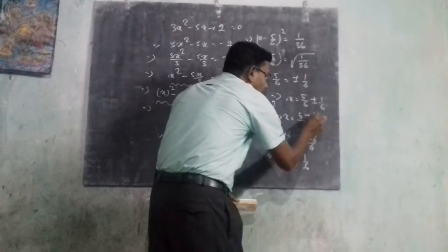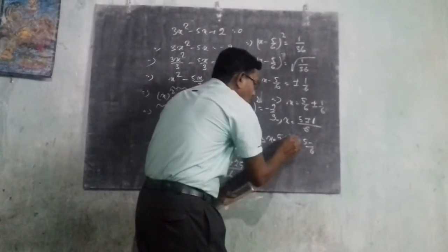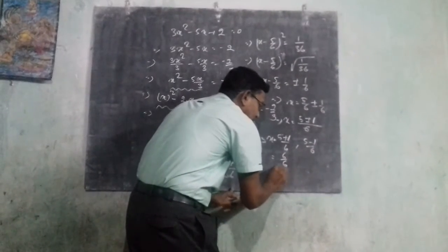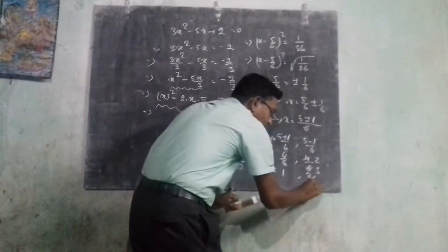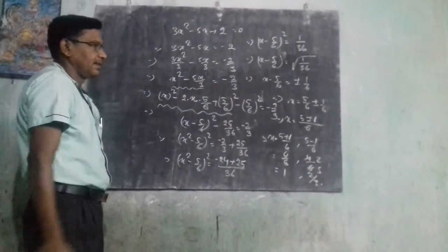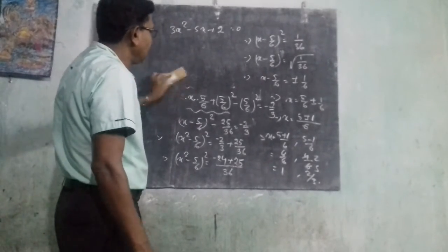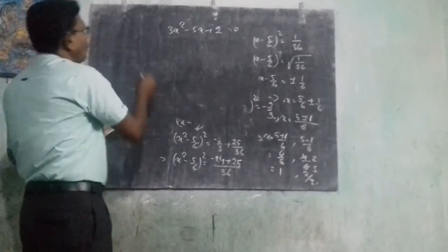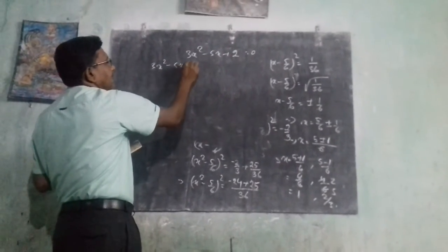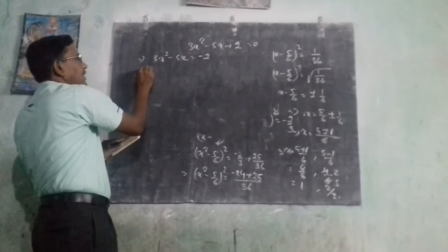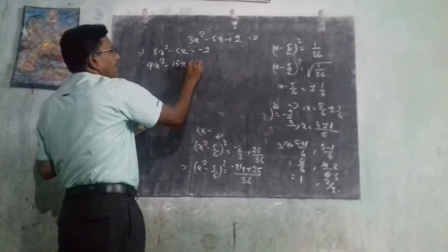Sorry, a correction here — the number becomes 1, not 6. So the values become 1 and 2 over 3. Now another method: here we multiply by 3. We have 3x squared minus 5x equals minus 2. We multiply both sides by 3, giving 9x squared minus 15x equals minus 6.